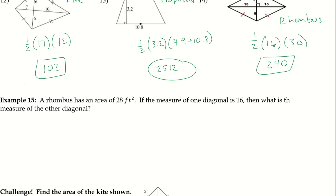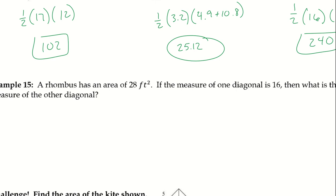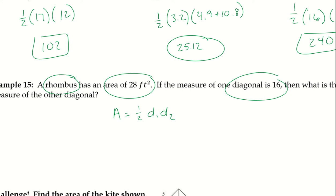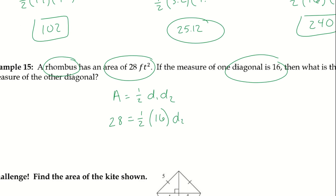For number 15: a rhombus has an area of 28 square feet. One diagonal is 16 — what is the other diagonal? Plugging into 28 = ½ × 16 × d₂ gives 28 = 8 × d₂. Dividing both sides by 8, the second diagonal is 3.5.